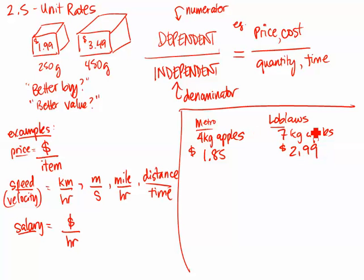Well, what we do is we find the unit rate. We find it per kilogram or per gram, depending on what we prefer our numbers to be like. So for Metro, our unit rate would be, and as we notice, cost goes on the top in the numerator. So this is $1.85 for 4 kilograms. If we use our calculator and find out the unit rate, it's $0.46 per kilogram, or $0.46 for each kilogram of apples.